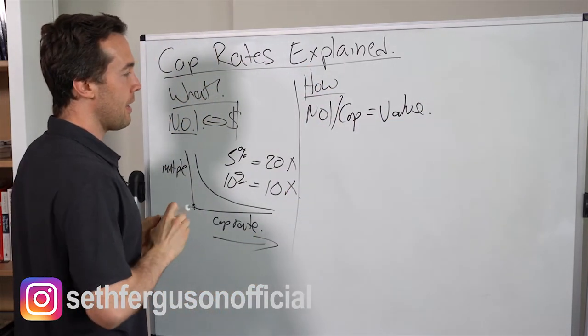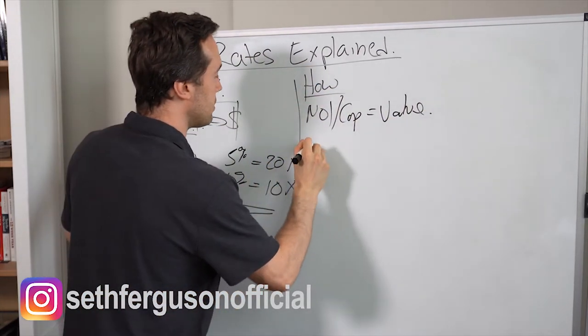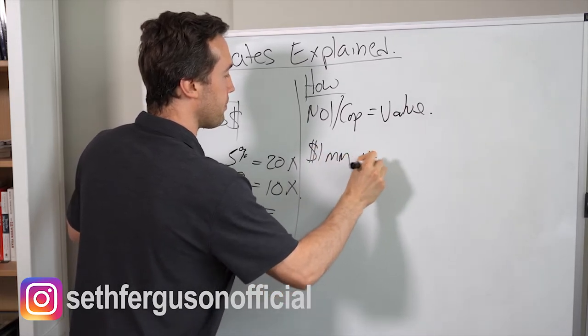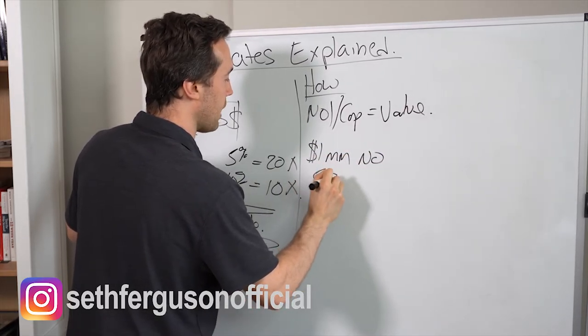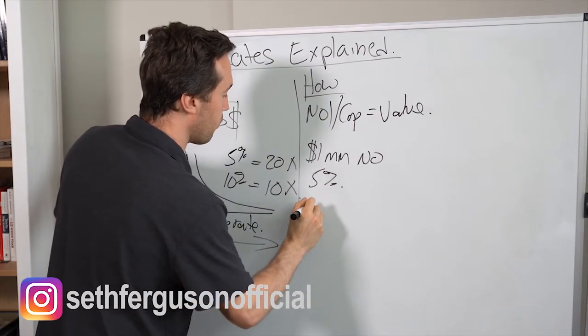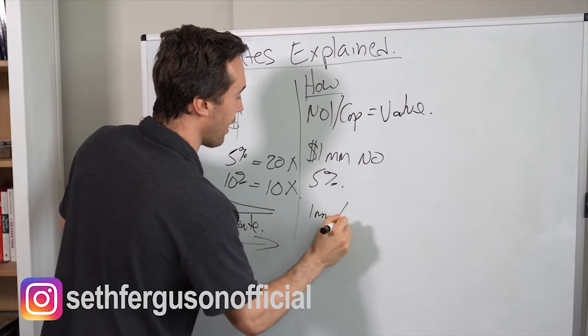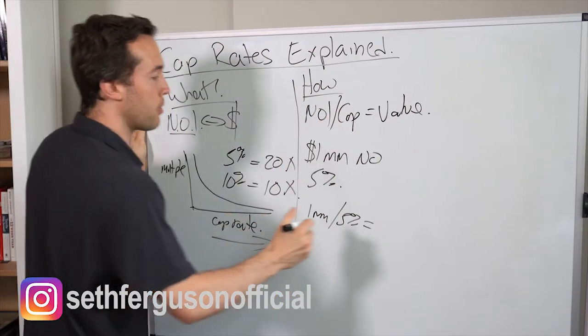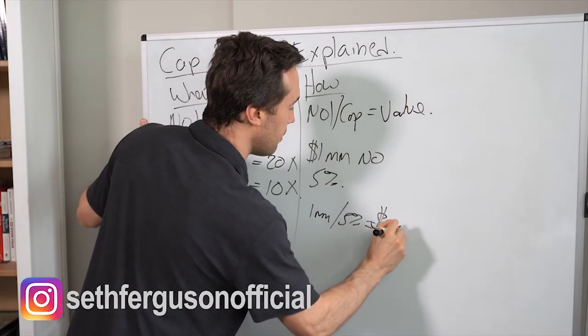So let's take an example. Let's say we have a property that produces $1 million of NOI, and we have a cap rate of 5%. So all we do in this case is we take the NOI of 1 million, we divide by the cap rate of 5%. And that gives us a valuation for the property of $20 million.